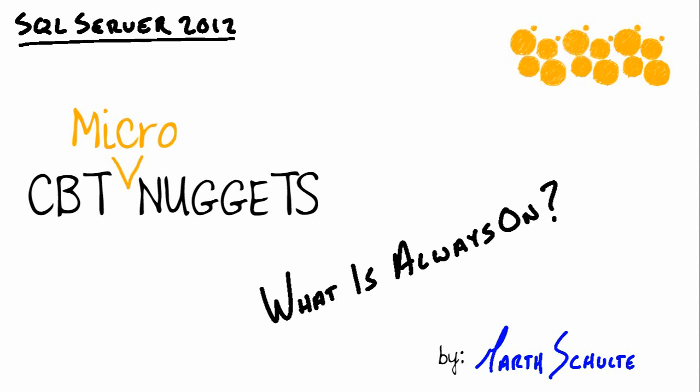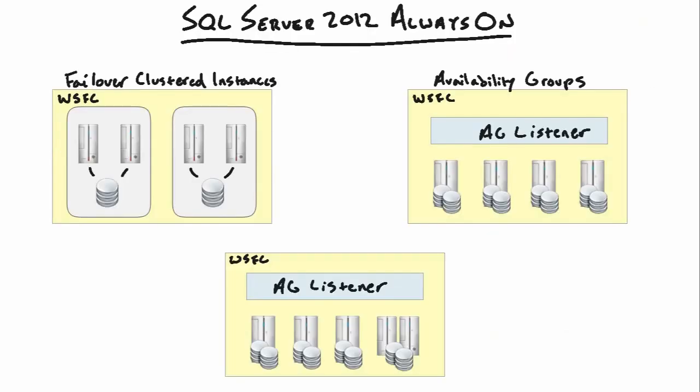So what in SQL Server would we always want to be on? Well, how about the database? How about the server that those databases sit on? That's really what Always On is all about, and we have a couple of features that target both servers and our databases.